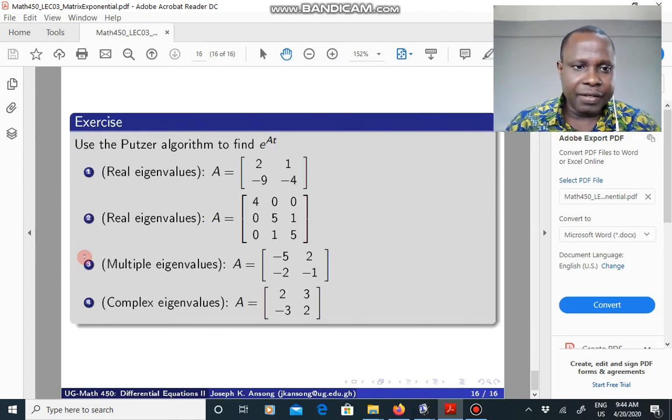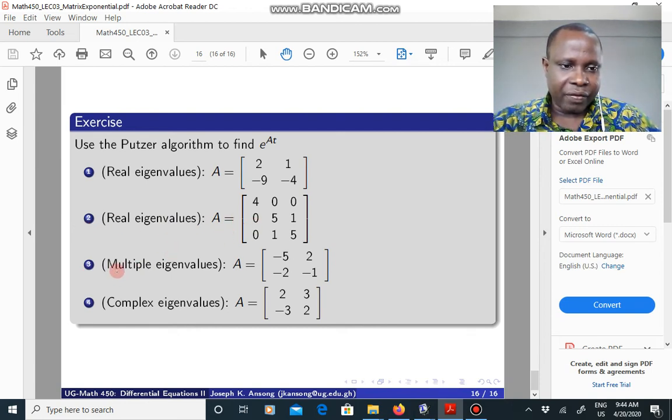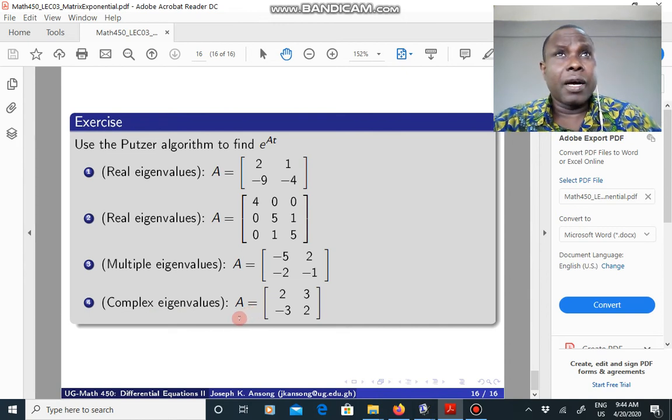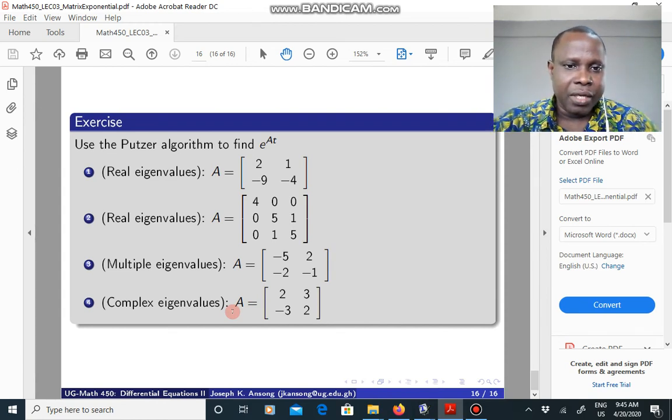I have these exercises here that you can try your hands on. I will let you submit two of them. So in this one you will find that the eigenvalues are real. The eigenvalues are real for this exercise two as well, but in this case it's a 3 by 3. In question three you have multiple eigenvalues like the first problem we solved. And the fourth one has complex eigenvalues. You can find an example of complex eigenvalues in one of the reference textbooks. The book by Kelly has an example of the complex eigenvalues. I will set up an exercise for you homework to try to submit exercise two and exercise four.